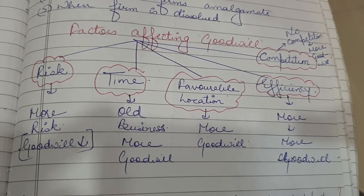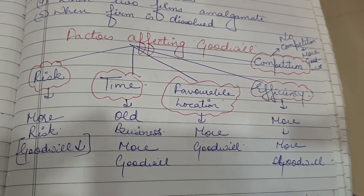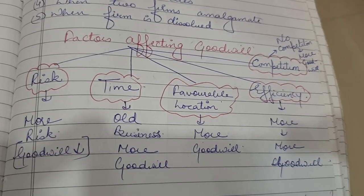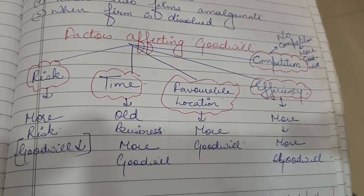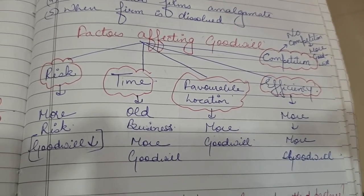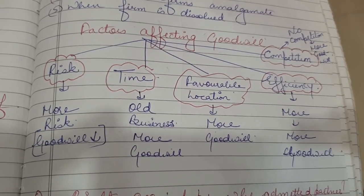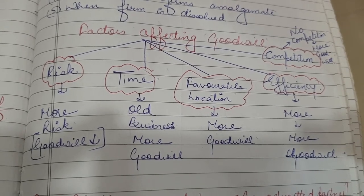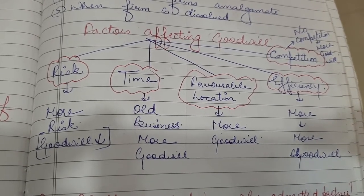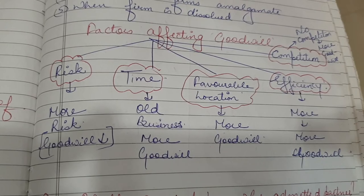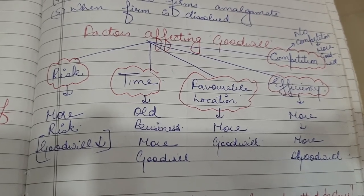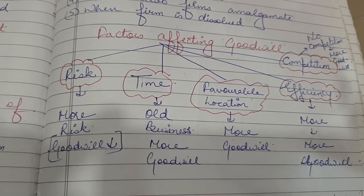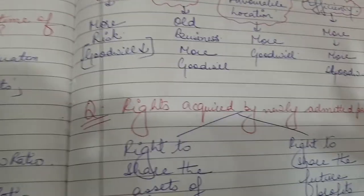The factors affecting goodwill are: risk — more the risk, goodwill will decrease; time — the older the business, the more the goodwill will increase; favorable location — if the location is favorable, goodwill will be more; efficiency — if efficiency increases, goodwill also increases; and competition — if there is no competition, the firm will likely have more goodwill.